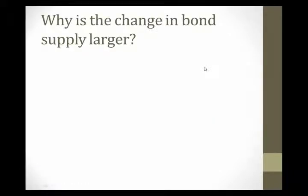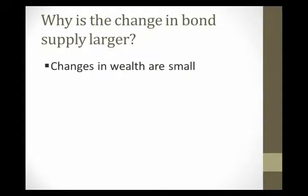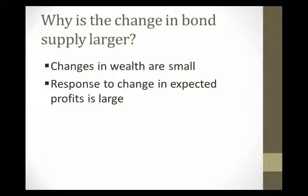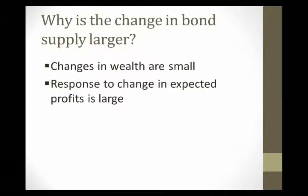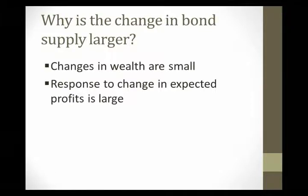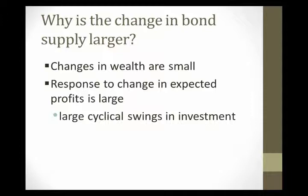So why am I drawing the change in bond supply larger? Why is that the right way to draw this? Well, changes in wealth are small during the business cycle, so the response to the change in expected profits might be a lot larger. We actually have data that tells us that income changes are much more stable than investment changes. So the shift in bond supply is a lot more sensitive and should be larger in response. We see large cyclical swings in investment, which lends support for the idea that the shift in bond supply should be larger than the shift in bond demand.